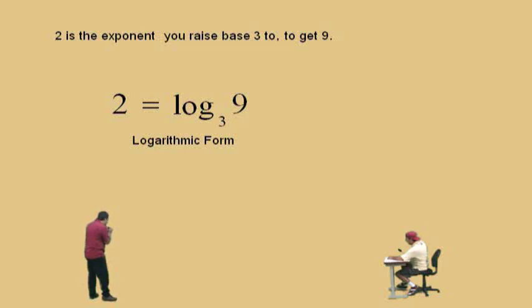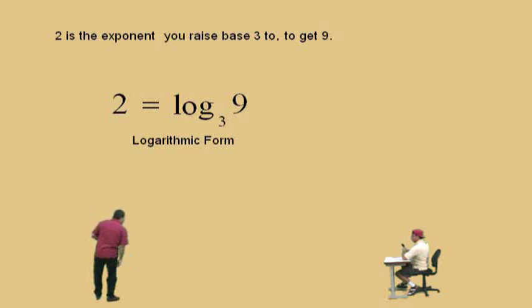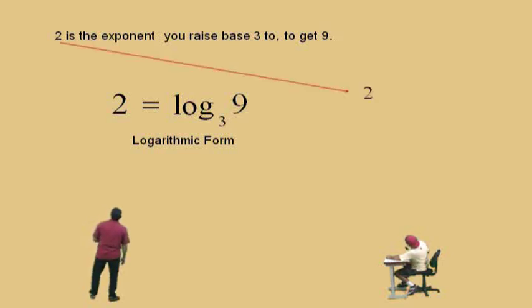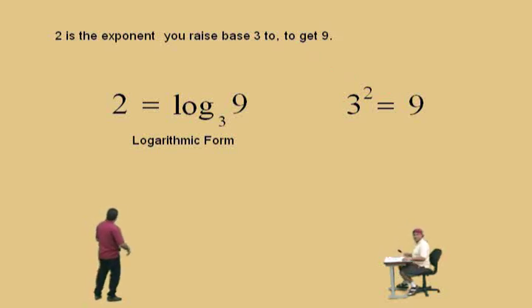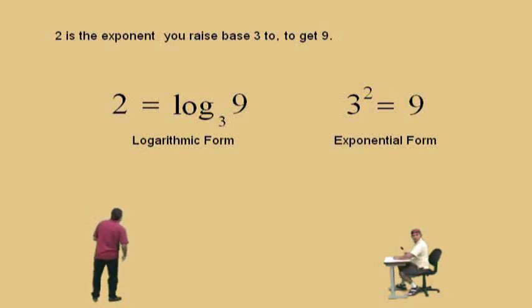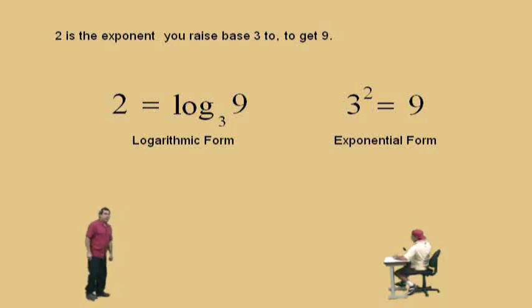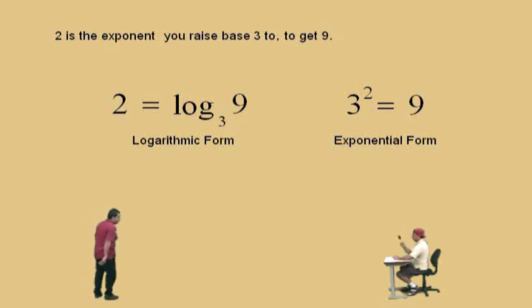Now I want you to look at your microphone — you'll see a switch there — and I want you to change the switch from logarithmic form to exponential form. Go ahead. Now I want you to read the same sentence again. Here we go — read it slowly. Two is the exponent. You raise base three to get nine. Now is that statement true? Is three squared equal to nine? Yes, it is. That is our exponential form. These two equations are basically equivalent — this is the logarithmic form, that's the exponential form.